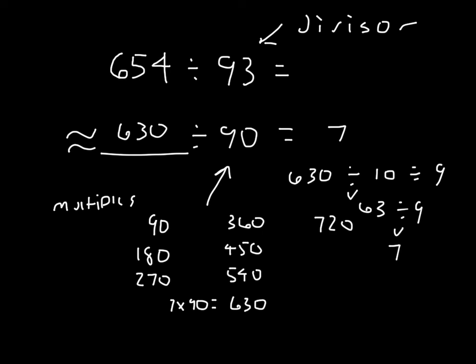In this case, our estimated whole is 630, and our estimated divisor is 90. So our estimated answer here, or estimated quotient, would be 7.